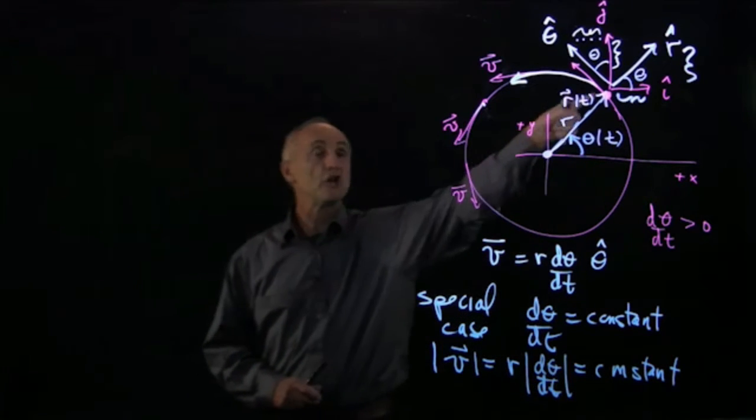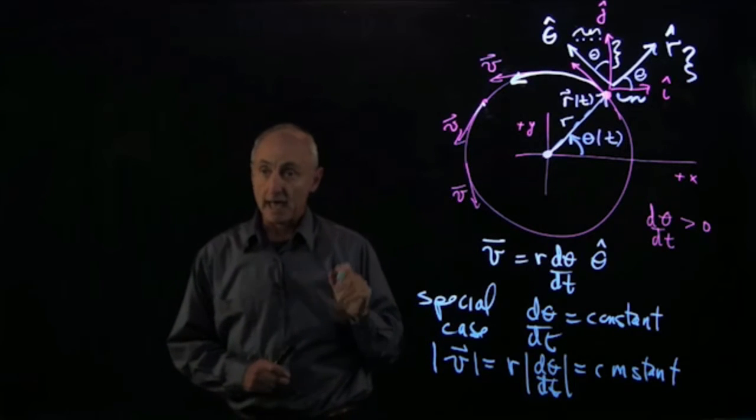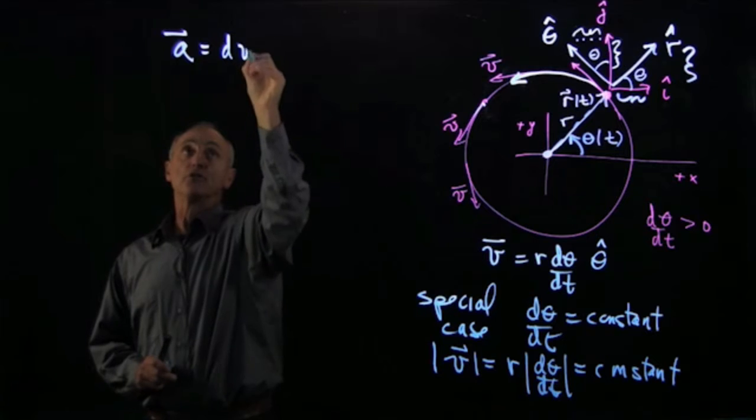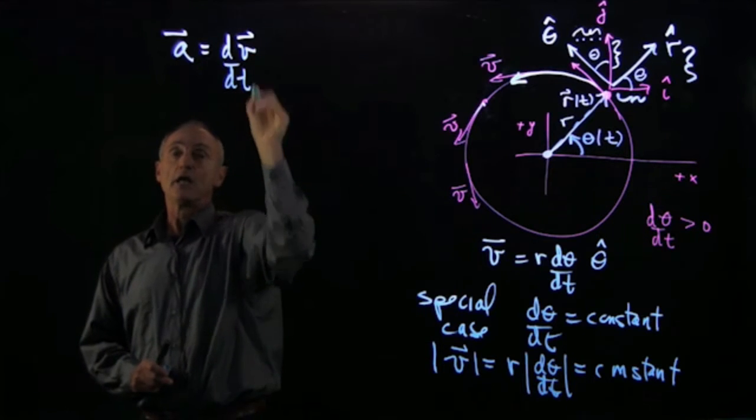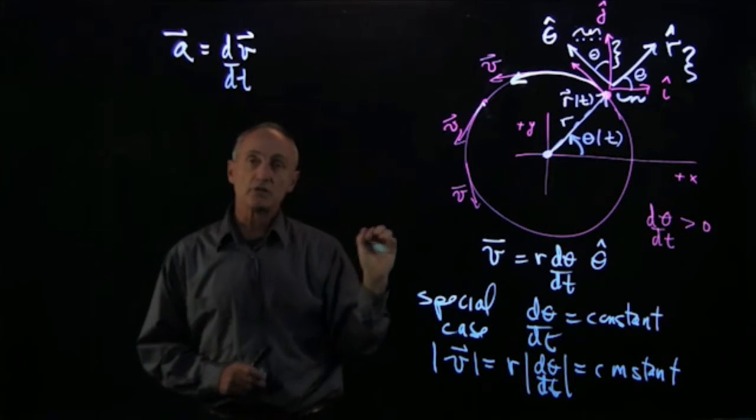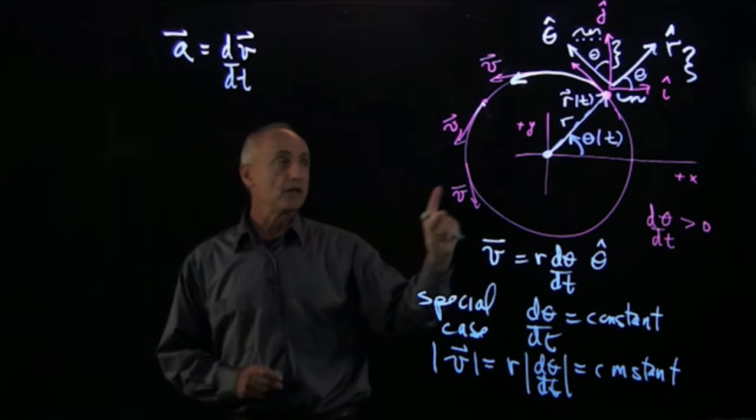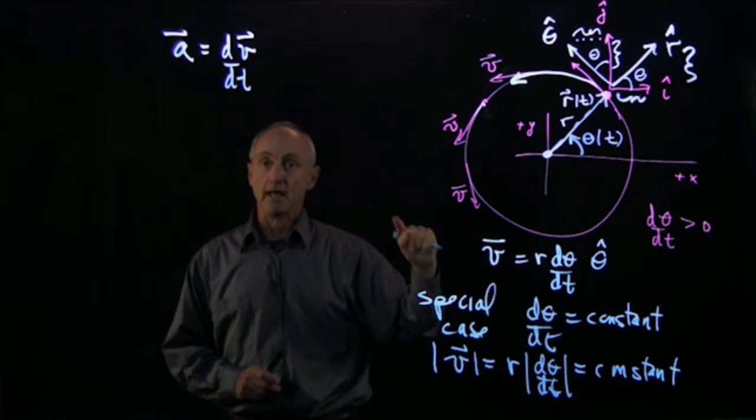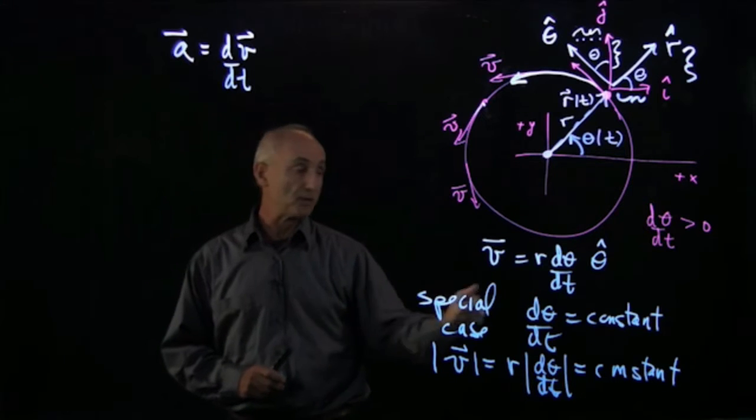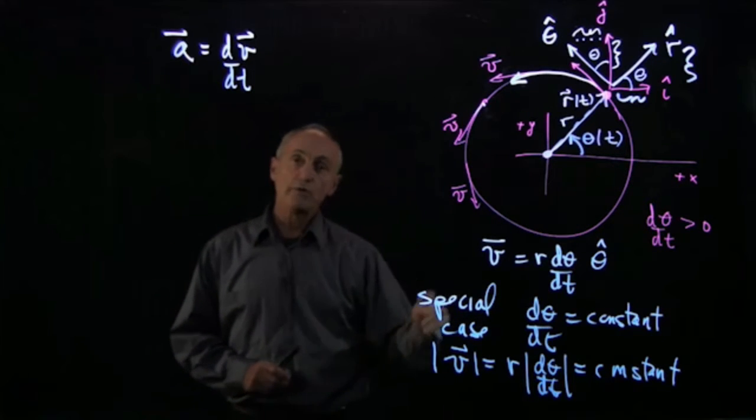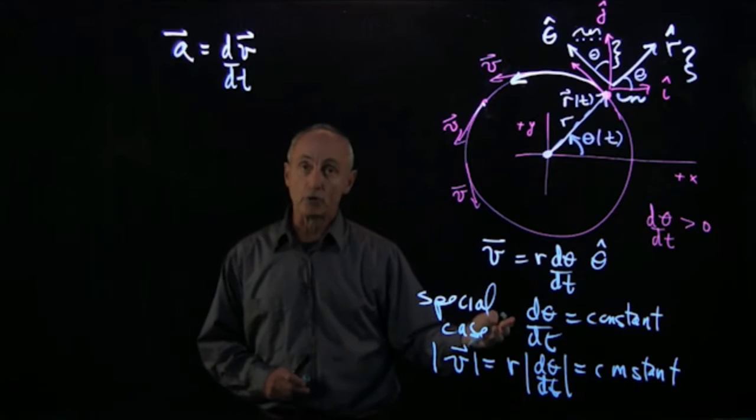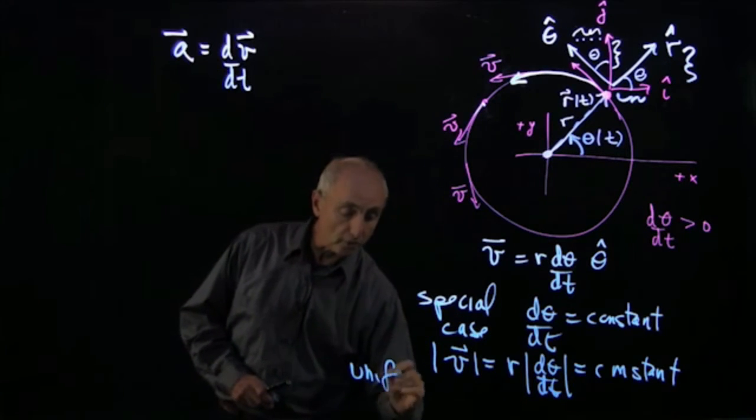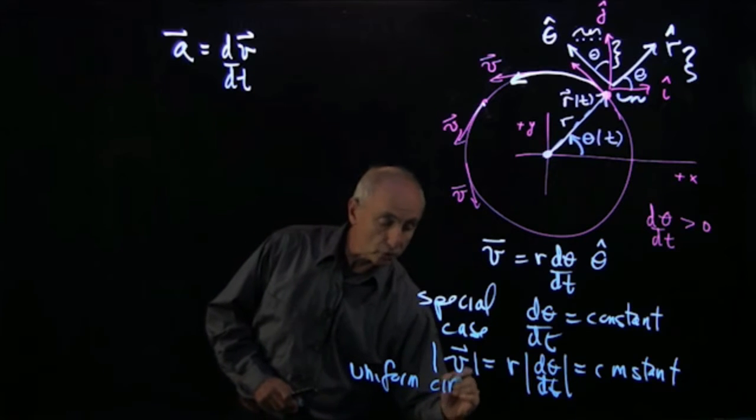But the velocity vector is changing direction. And we know by definition that the acceleration is the derivative of velocity. And so what we see here is we have a vector that's constant in magnitude but changing direction. And we now want to calculate the derivative in this special case. We refer to this case as uniform circular motion.